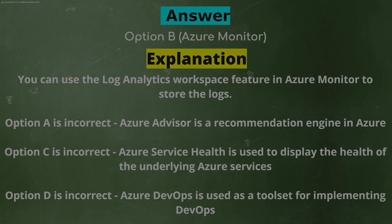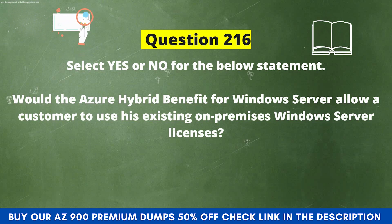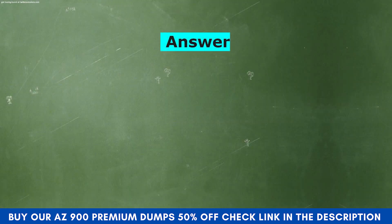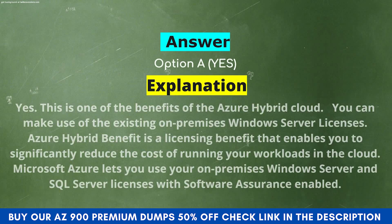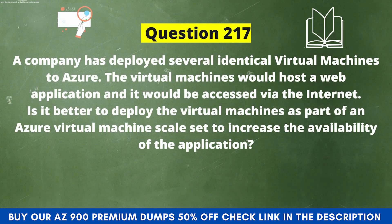Next question: Would the Azure Hybrid Benefit for Windows Server allow a customer to use existing on-premises Windows Server licenses? Option A: Yes. Option B: No. The correct answer is Option A, Yes. This is one of the benefits of the Azure Hybrid Cloud — you can make use of existing on-premises Windows Server licenses. The Azure Hybrid Benefit is a licensing benefit that enables you to significantly reduce the cost of running workloads in the cloud, allowing use of on-premises Windows Server and SQL Server licenses with Software Assurance enabled.